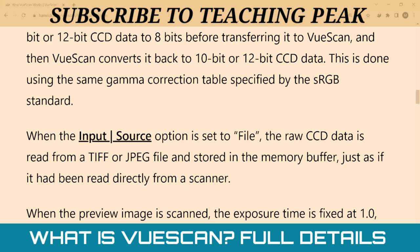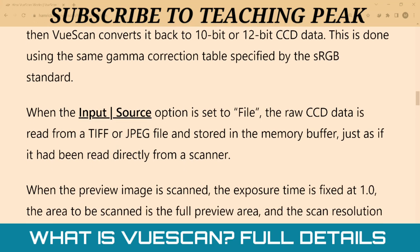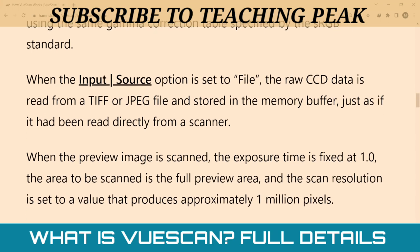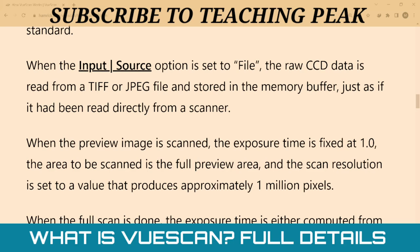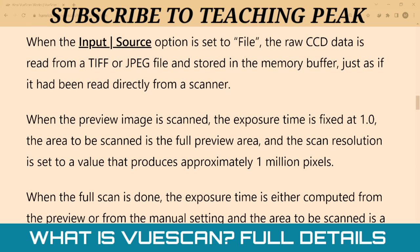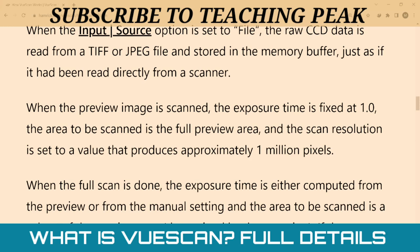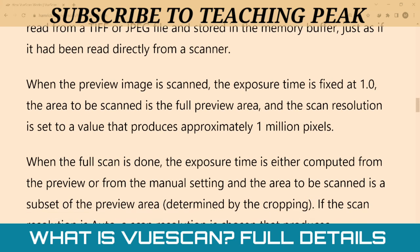This is done using the same gamma correction table specified by the sRGB standard. When the input source option is set to file, the raw CCD data is read from a TIFF or JPEG file and stored in the memory buffer, just as if it had been read directly from the scanner. When the preview image is scanned, the exposure time is fixed at 1.0 and the area to be scanned is the full preview area.